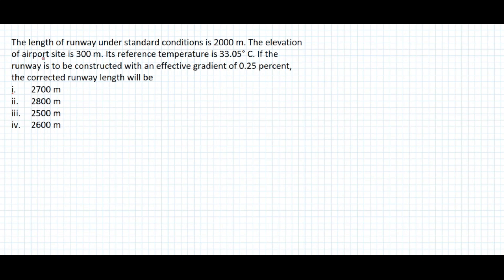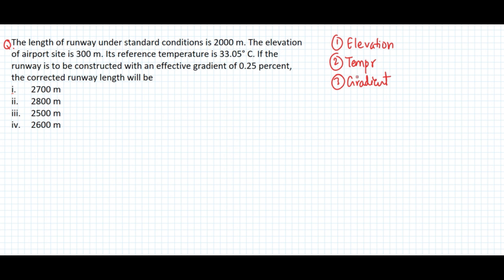Hello everyone, welcome to Engineered. Today we'll be talking about airport engineering and solving a problem related to runway length correction. The three corrections are: elevation, temperature, and effective gradient. The length of runway under standard condition is given as 2,000 meters. RL is given as 300 meters, airport reference temperature (ART) is 33.05°C, and effective gradient is 0.25%.